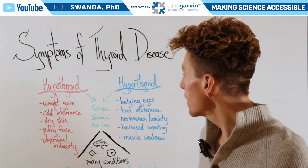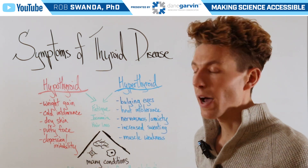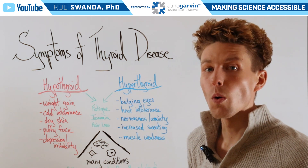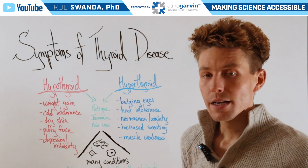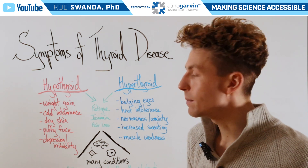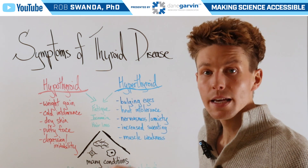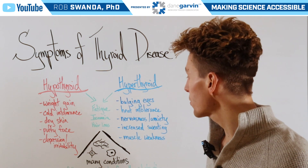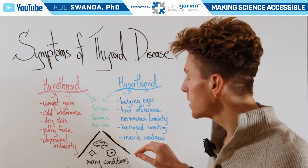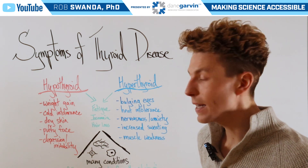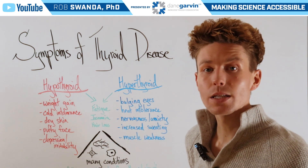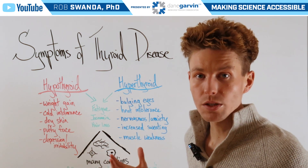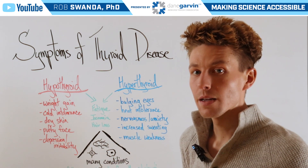But in hyperthyroidism, or an overactive thyroid, some of the common symptoms include bulging eyes, heat intolerance, nervousness or anxiety, increased sweating, as well as muscle weakness.